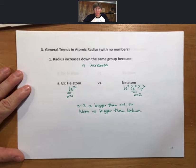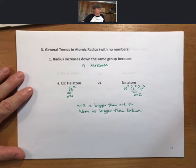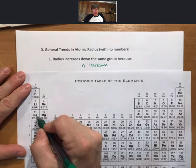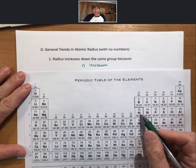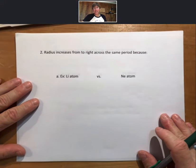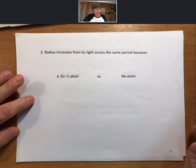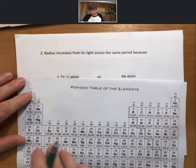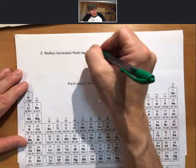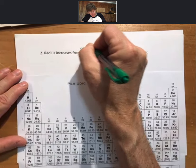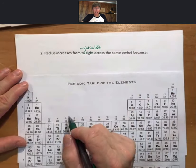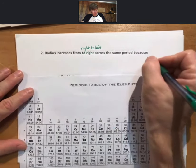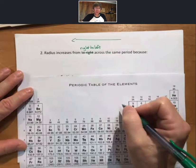That works down the same group, regardless of what group it is. So sodium is bigger than lithium, potassium is bigger than sodium, gallium is bigger than aluminum. So here we go. So let's look at it. Radius increases from, typo, from right to left across the same period.